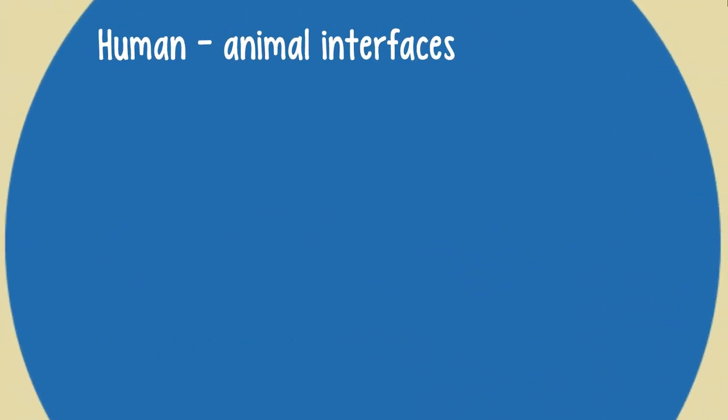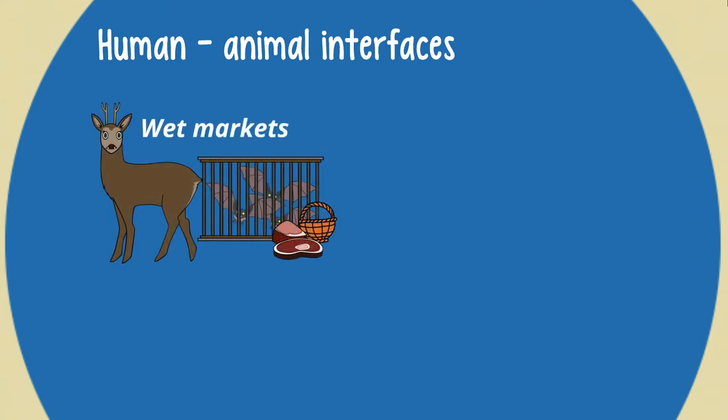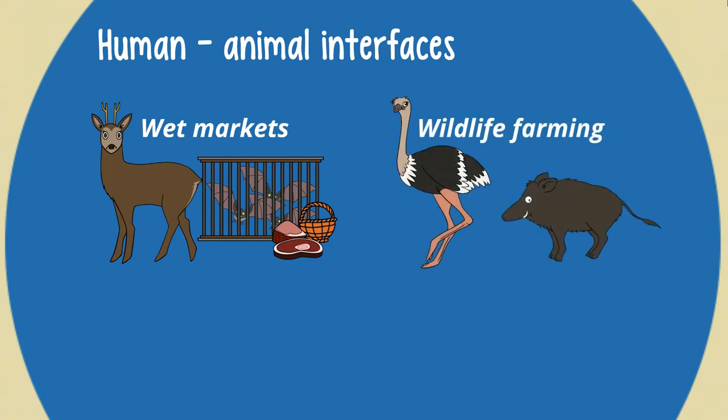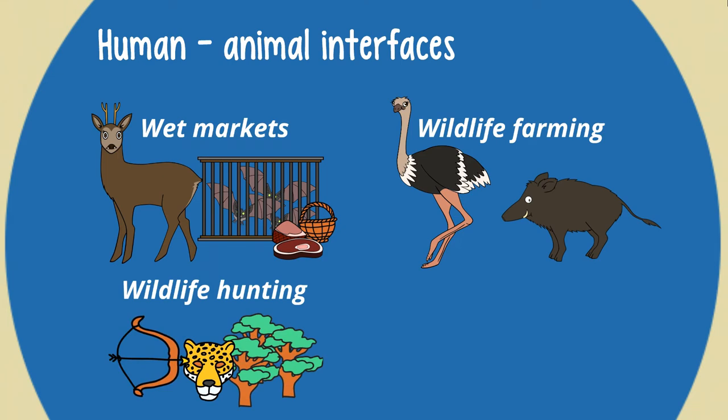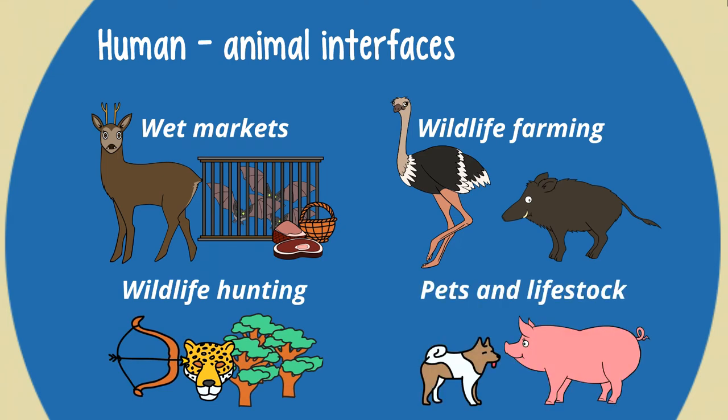In recent decades, humans have intensified their interactions with animals, making disease spillover and possibly pandemics ever more likely. Zoonotic disease spillover happens where humans and animals meet. Scientists call this the human-animal interface. Those interfaces include wet markets and other live animal markets, intensive wildlife farming, wildlife hunting and consumption, and also livestock and pets.